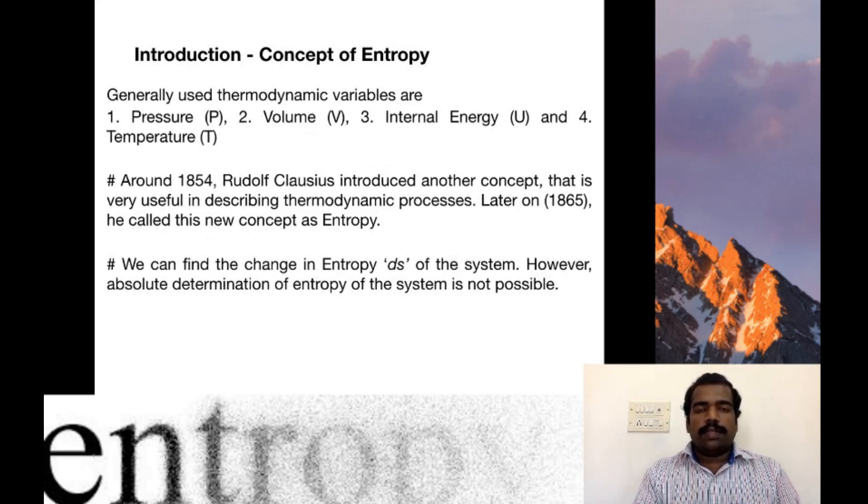Coming to Introduction. Before the concept of Entropy, we generally used four thermodynamic variables: pressure, volume, internal energy, and temperature. Around 1854, Rudolf Clausius introduced another concept which is very useful in describing thermodynamic processes. Later, in 1865, he called this new concept Entropy, denoted by the letter capital S.